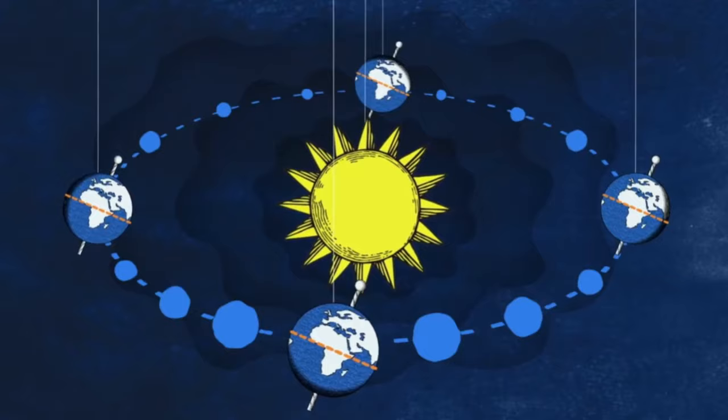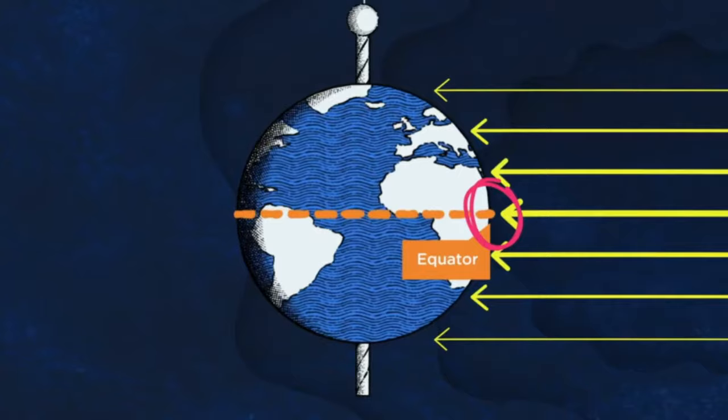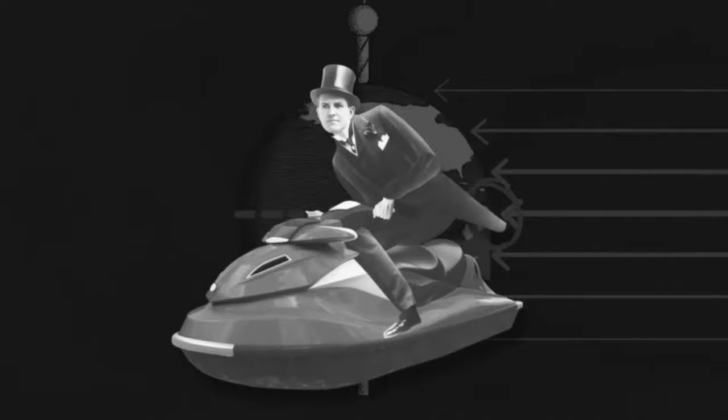If Earth wasn't tilted, the Sun would just shine directly on the equator all year long, leaving us without seasons and wrecking everyone's summer plans. But we also wouldn't have solstices or equinoxes.